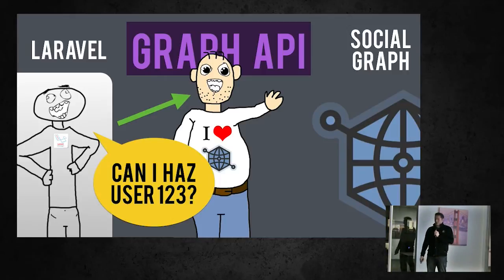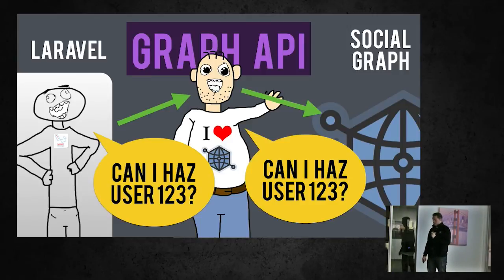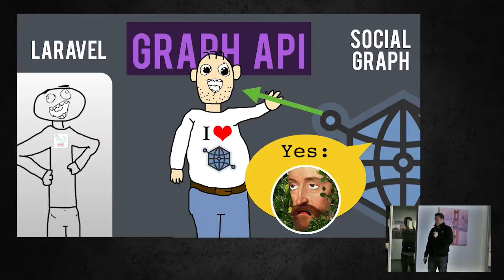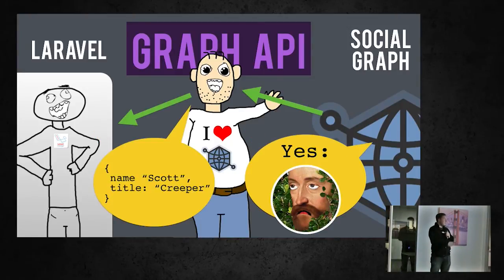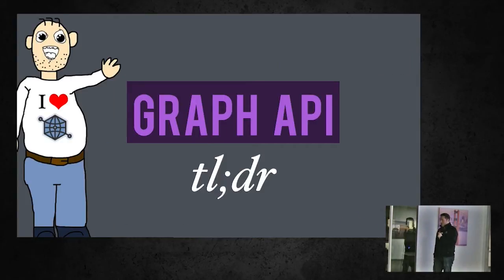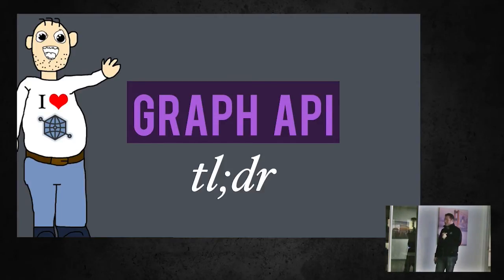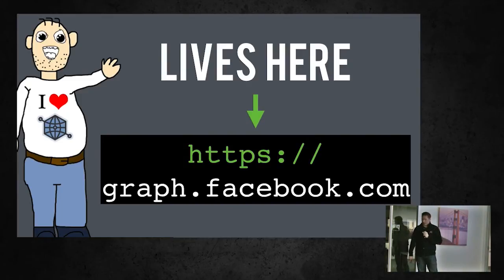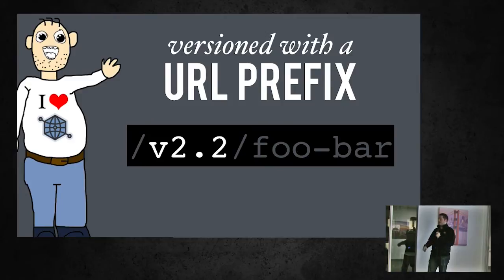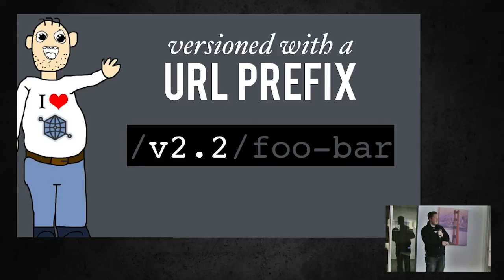What happens is your Laravel app asks the Graph API for user 123. Graph goes to the social graph network at Facebook and says, can I have user 123? Social graph returns that user node, and Graph will translate it into an actual JSON representation — something that can be used by your Laravel app. The Graph API lives at graph.facebook.com. It's versioned through the URL with the letter V and then the version number — 2.2 is the current latest version.